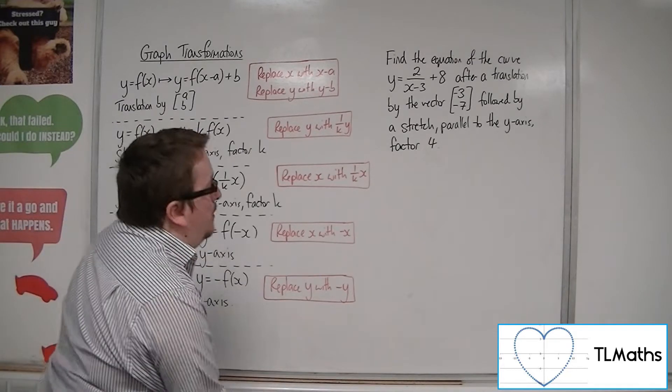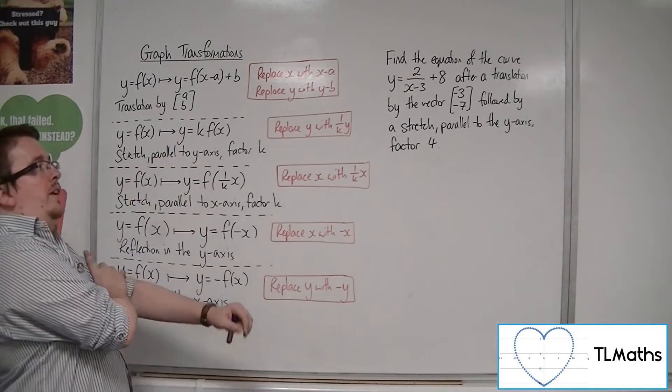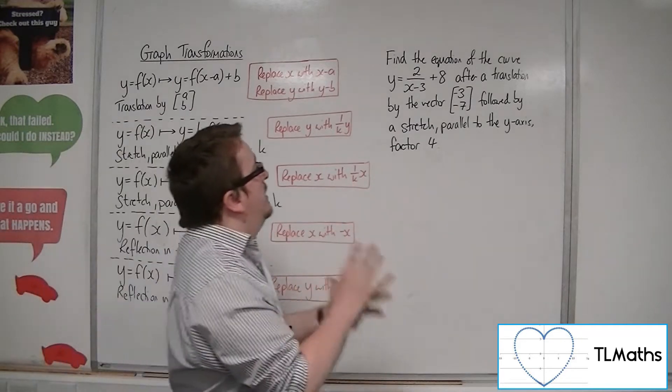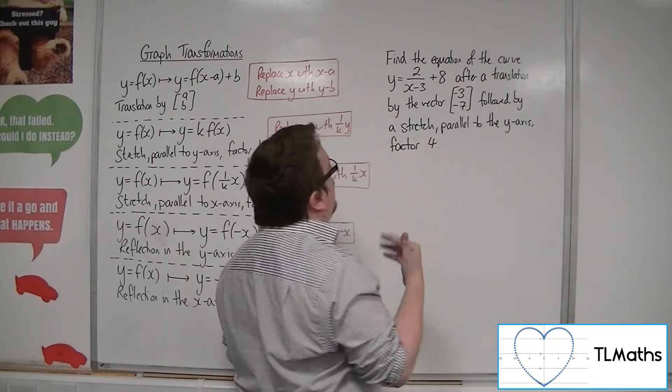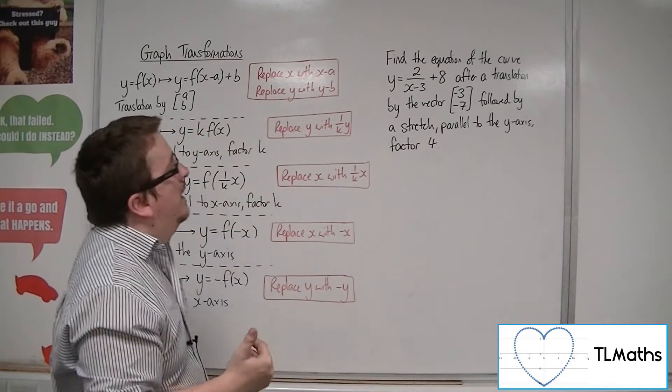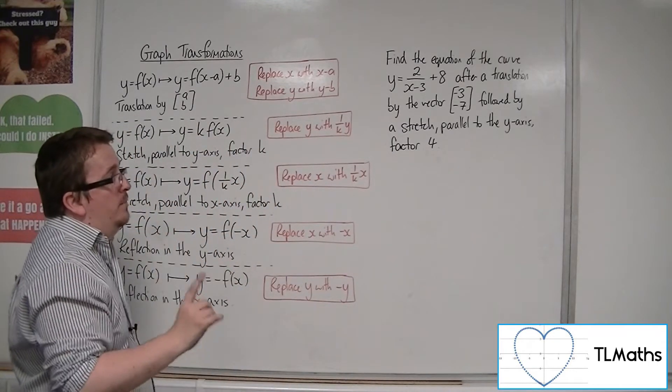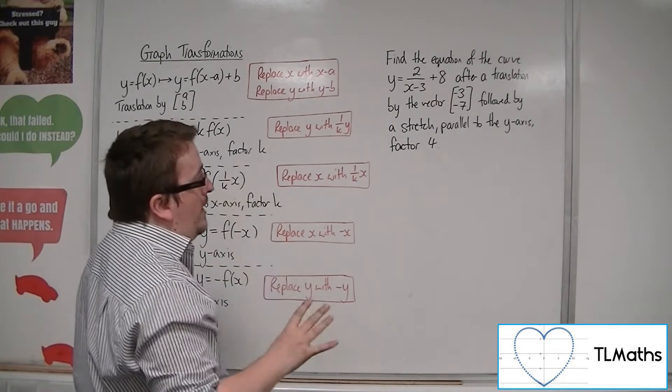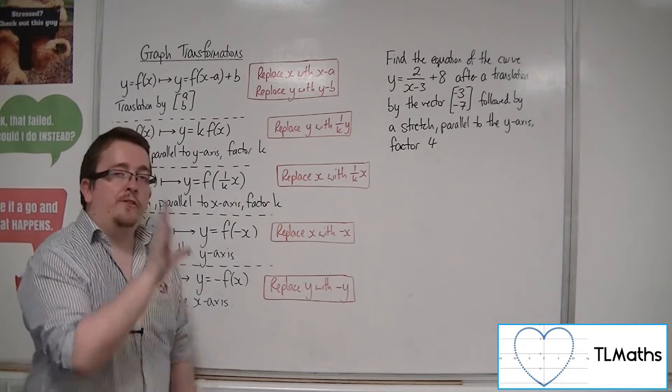Let's say I give you a particular question with a couple of transformations involved. Find the equation of the curve y equals 2 over x minus 3 plus 8 after a translation by the vector minus 3 minus 7, followed by a stretch parallel to the y-axis factor 4.